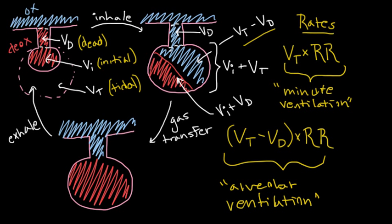And by the way, there are some fancy ways to write both of these. Vt times Rr, the respiratory rate, can be written as Vt dot. And the dot signifies a rate. Meanwhile, this guy can be written as Va dot. Where again, the dot represents the rate and the A stands for alveolar.